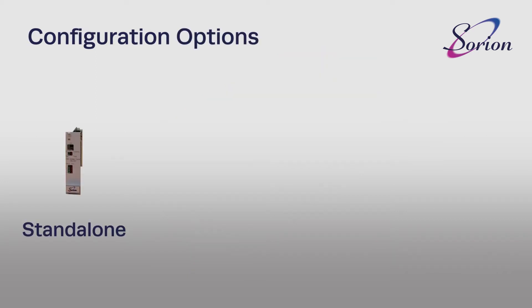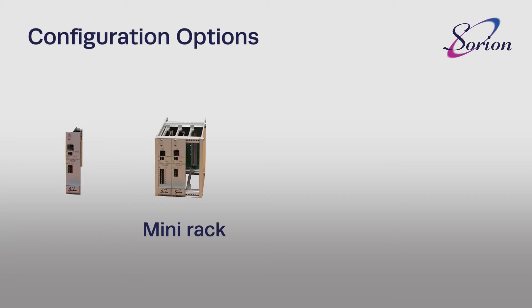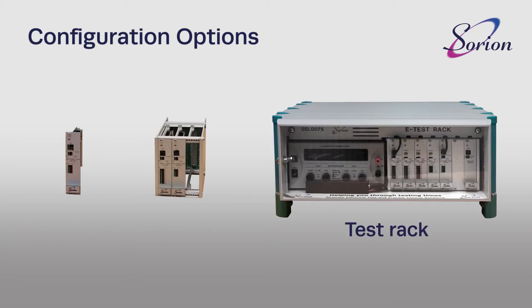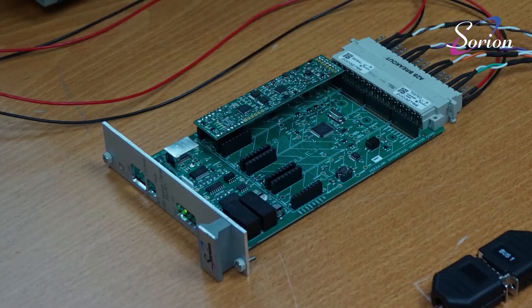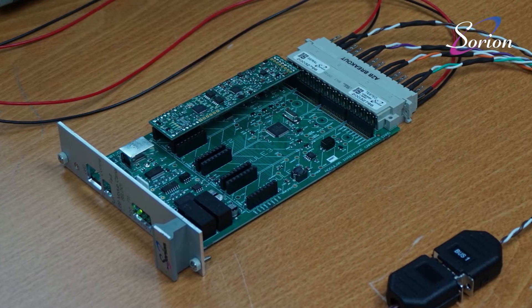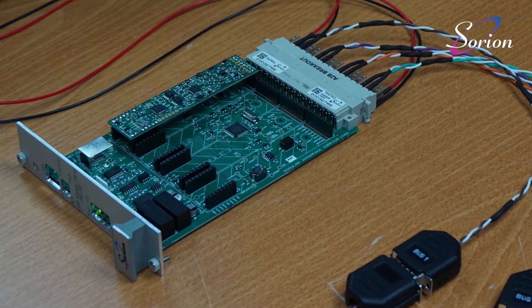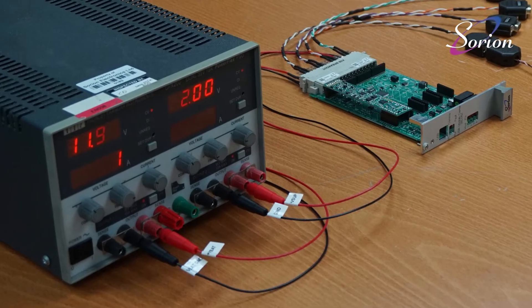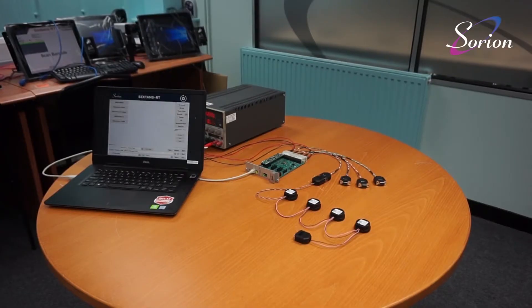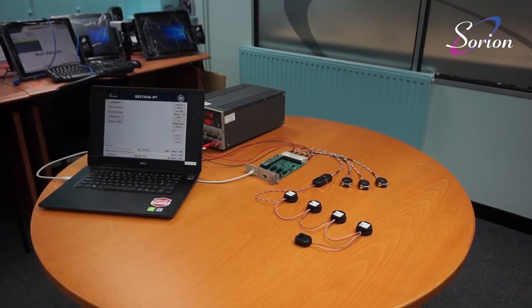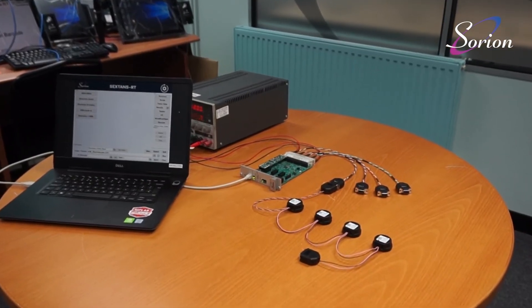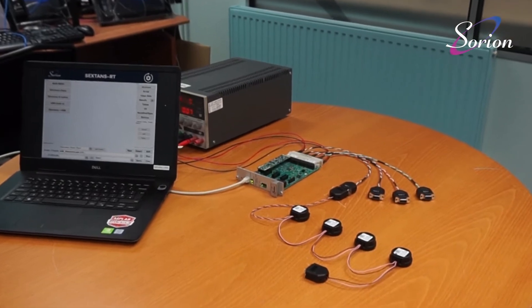A carrier card can be used in a standalone configuration, as part of a small system, or as part of a full e-test station. For the purpose of clarity, a standalone configuration will be demonstrated. All that is required is the carrier card with module, a power supply, broken out connections to allow access to the A2B buses, and a Windows PC on which to run Sexton.